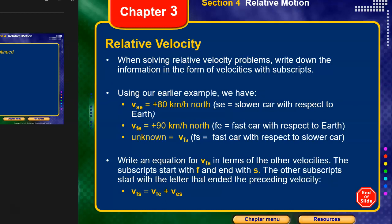They say write an equation in terms of the other velocities. The subscripts start with F and S. I don't know what those are saying. The other subscripts start with the letters that end the preceding velocity. Like the earth is rushing past you underneath like a treadmill. You're like, I'm not going anywhere. I'm just right here. The earth is going underneath me. As you're driving down the road. You got out of the car, then you figure out, yeah, that actually the earth wins.